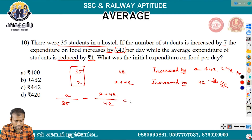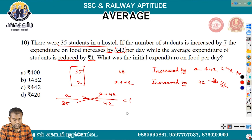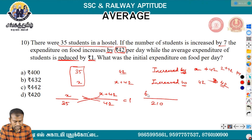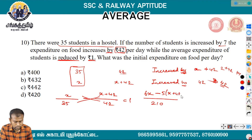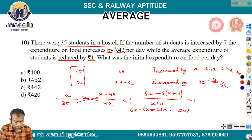The difference between the two averages is 1. Using LCM of 35 and 42 which is 210: the equation gives 6x minus 5(x plus 42) = 210. Simplifying: 6x minus 5x minus 210 = 210, so x = 420. The original total expenditure is 420.